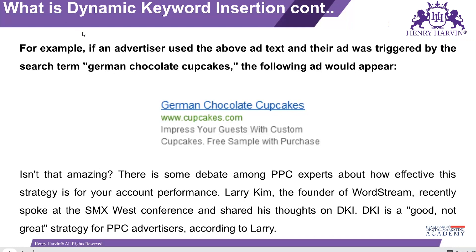When you see the word 'dynamic,' it means keep changing — it is not fixed. Dynamic simply means the ability to change as per the situation. So when someone is looking for cupcakes and you have multiple ads with different keywords, and one of the keywords is 'German chocolate cupcakes,' when that person searches for it on Google, your ad will appear on the screen.